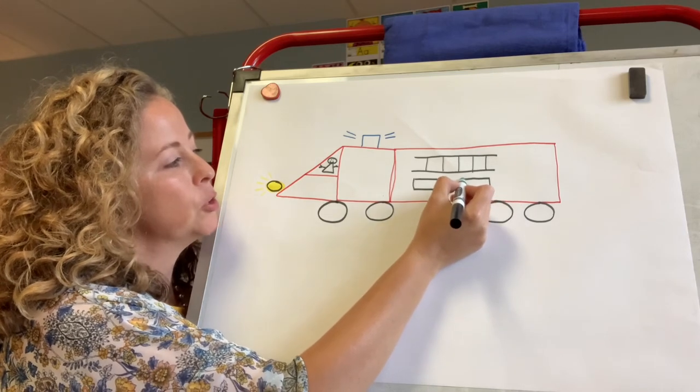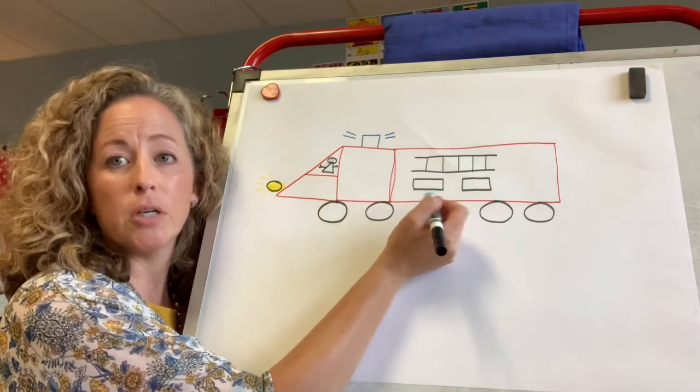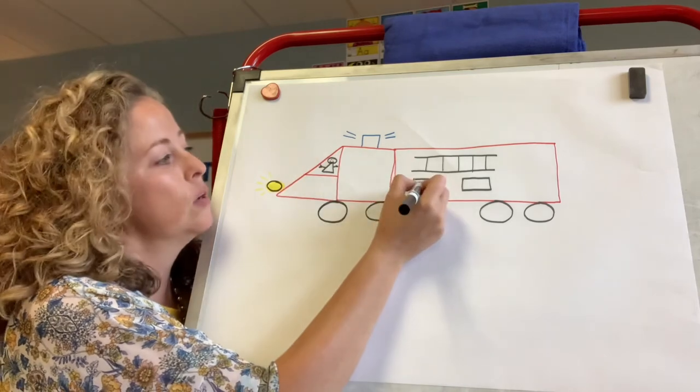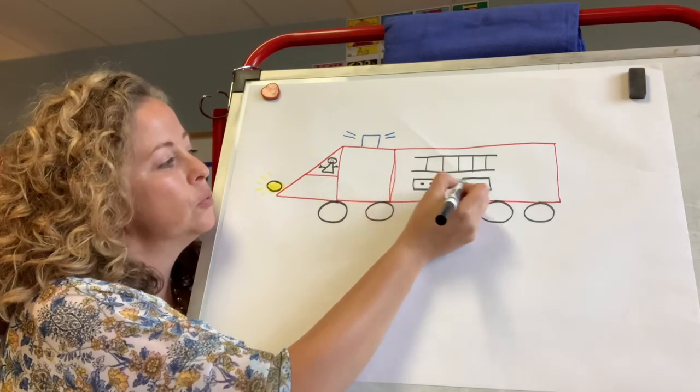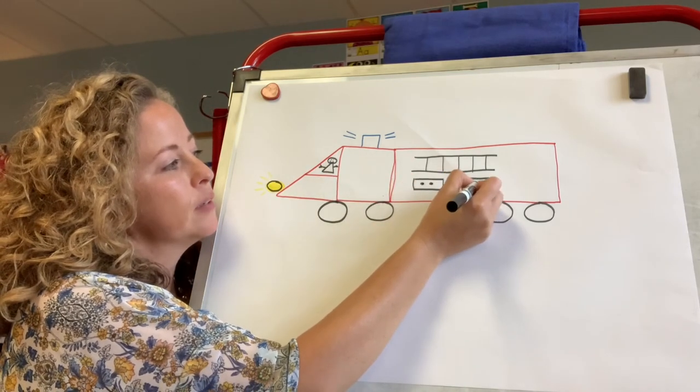Next I'm going to make two rectangles. One, two. And in each rectangle I'm going to put two dots. One, two. One, two. One, two.